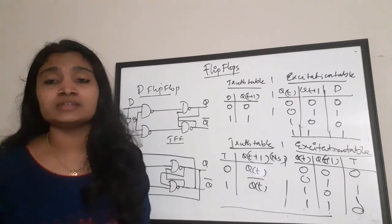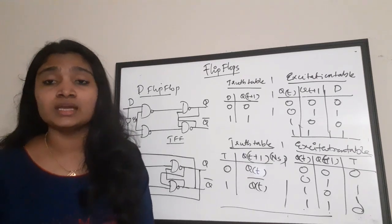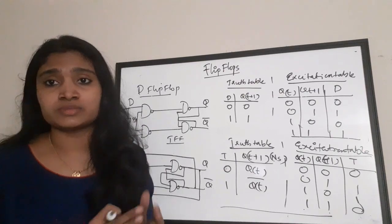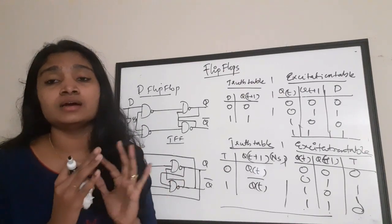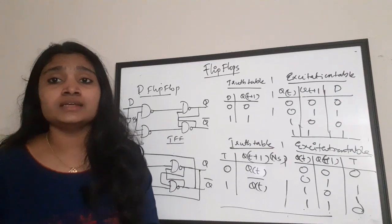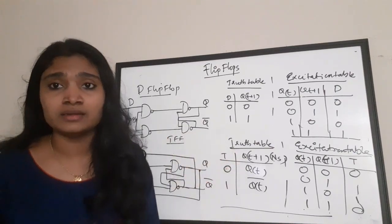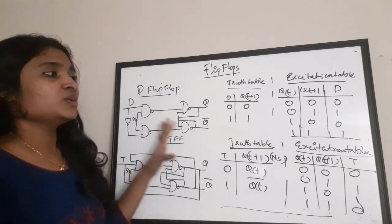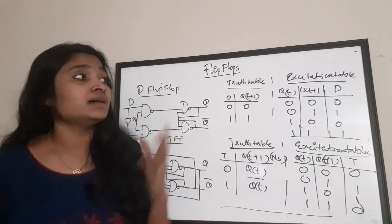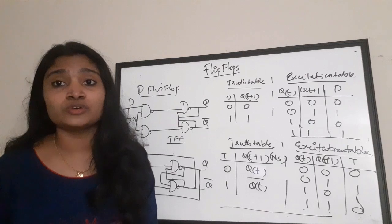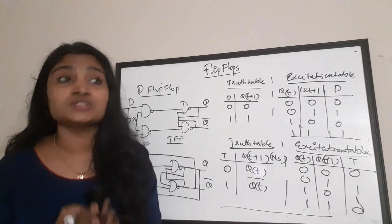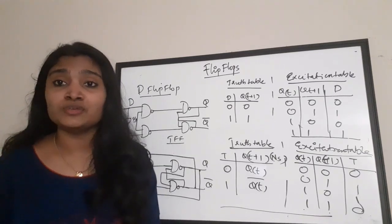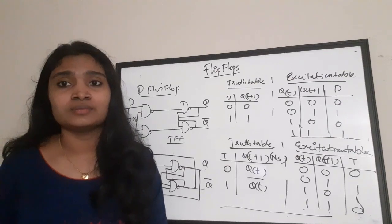Whenever you are studying any topic, try to connect it with other related topics. For flip-flops, you can connect SR and JK together, and D and T together. Studying them in a connected manner makes them easier to remember and reproduce in your exams. This is a capsule video useful for competitive exam preparation. If this was helpful, please give it a thumbs up, share it with your friends, and subscribe to the channel.